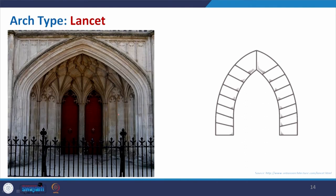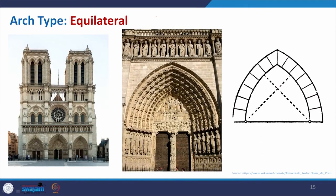Coming to the lancet arch — also called the pointed arch system — it does not have a single center. This particular form has a center somewhere on one side and another center on the other side, creating a pointed arch. It is normally used in Byzantine and post-Gothic architecture, where this kind of arch is most commonly found.